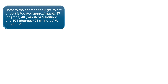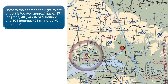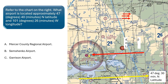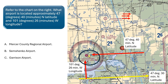Refer to the chart on the right. What airport is located at approximately 47 degrees 40 minutes north latitude and 101 degrees 26 minutes west longitude? Each tick mark on the map represents 1 minute of latitude or longitude. Since there are 60 minutes of latitude between each line of latitude, the yellow arrow represents 47 degrees and 30 minutes north latitude. Count up 10 tick marks to find 47 degrees 40 minutes north latitude, and counting 26 tick marks to the left of the 101 degree longitude line gives 101 degrees 26 minutes west longitude. Therefore, the airport located at those coordinates is Garrison Airport.